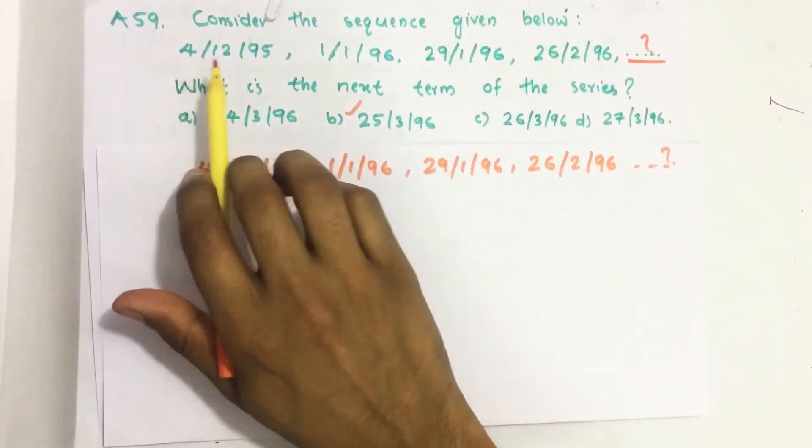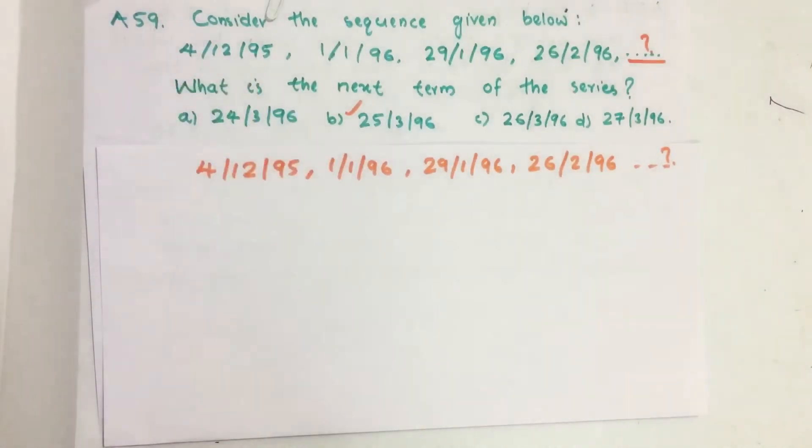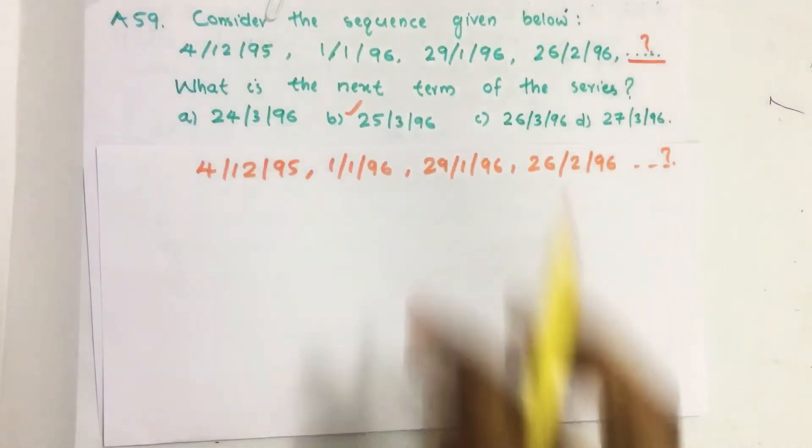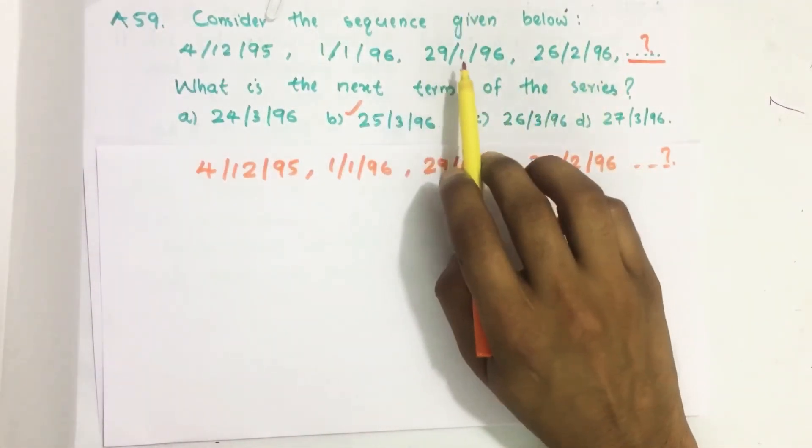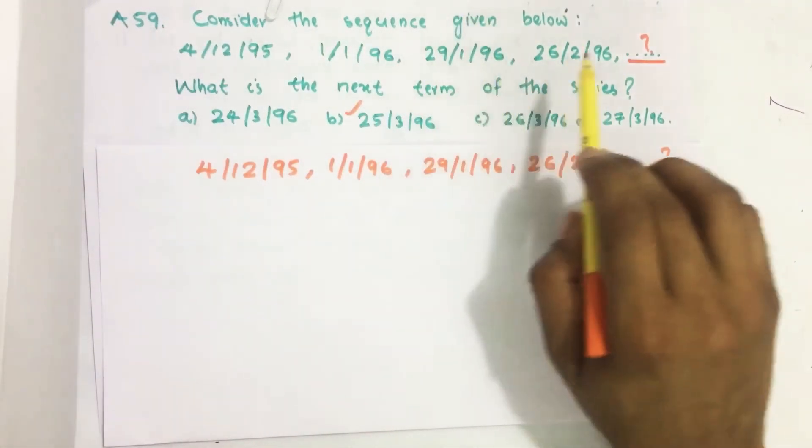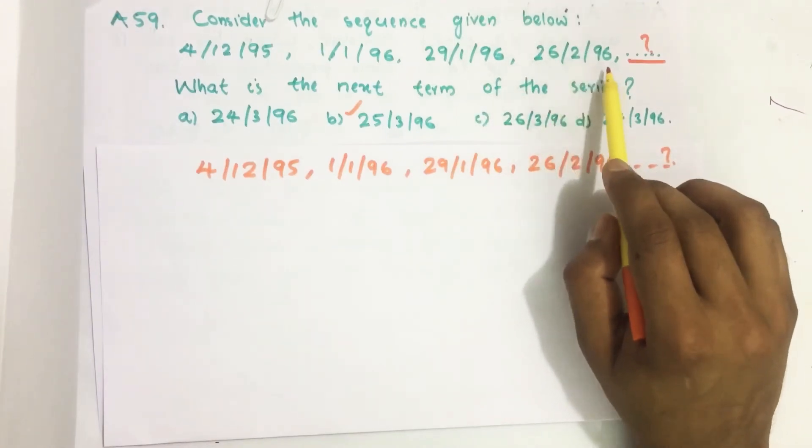Now see this is 4th December 1995, this is 1st January 1996, this is 29th January 1996 and this is 26th February 1996.